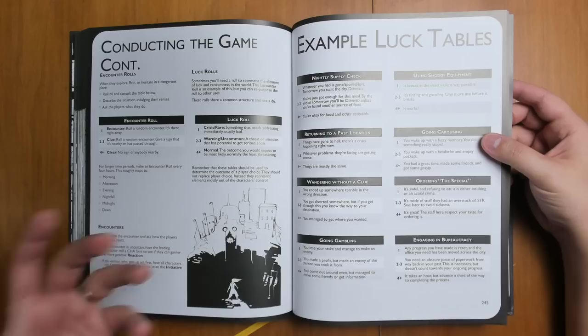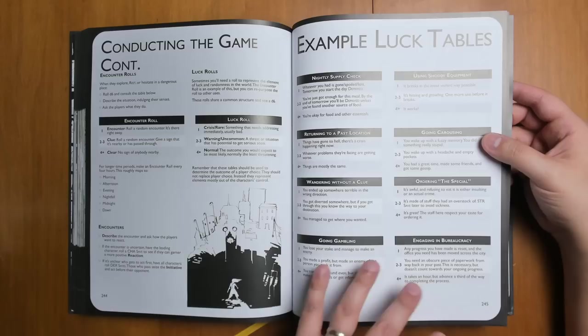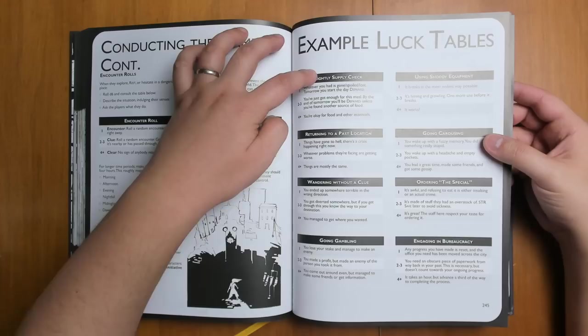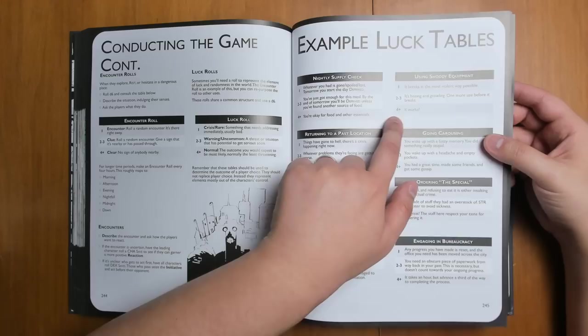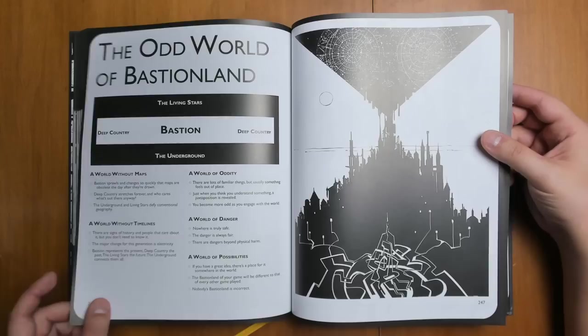We have some luck tables. So, basically, roll a D6 to see what happens if you're lingering in a possibly dangerous space. And he gives you lots of examples of how to hack this, how it works in principle, and lots of ways that it could be used in different situations. For example, you could use it for nightly supply check. You could use it for does shoddy equipment break and so on. It's always four or five or six is a good result. Two or three is kind of a partial success where there's a complication. And one is something really bad. And you can use that pattern in all sorts of circumstances.